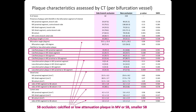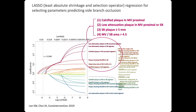The plaque analysis is quite complex. In brief, bifurcations with complex plaque — such as calcified or low-attenuation plaque in the main or side branch — or bifurcations with a smaller side branch compared to the main branch, tended to lose the side branch after main branch ballooning or stenting. We performed regression analyses and found four parameters that can robustly predict side-branch occlusion during PCI.